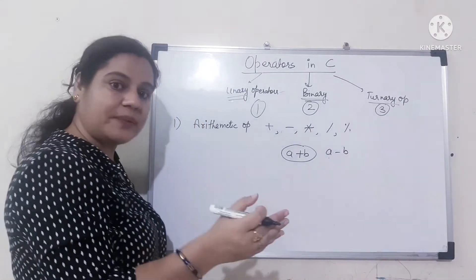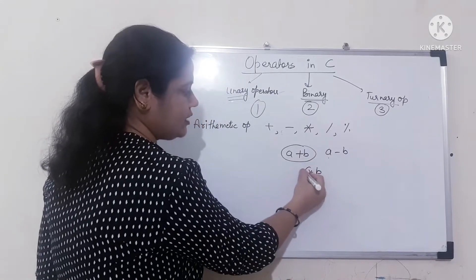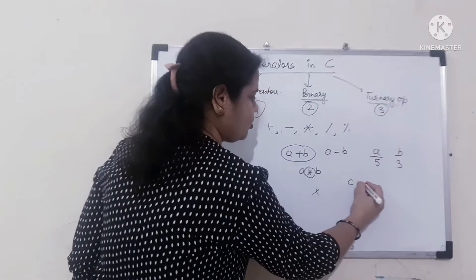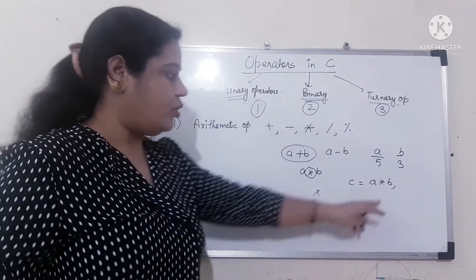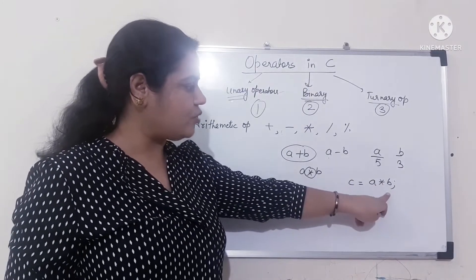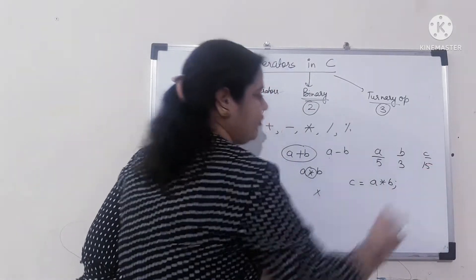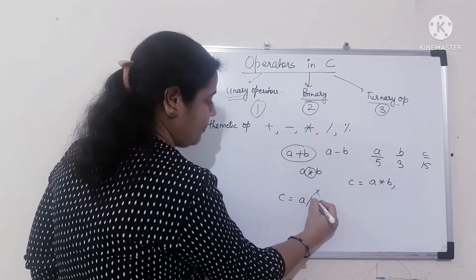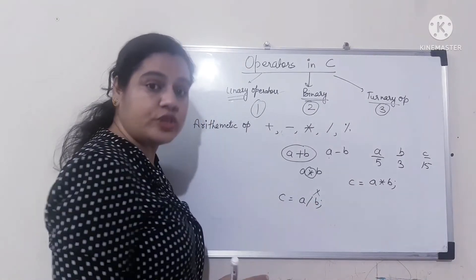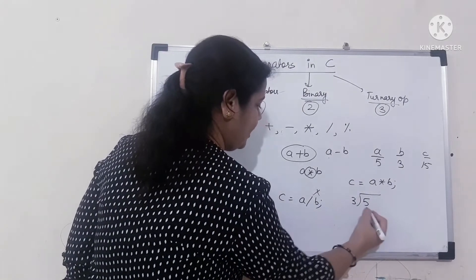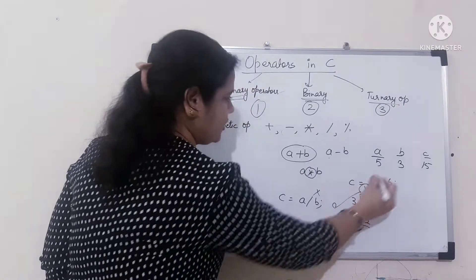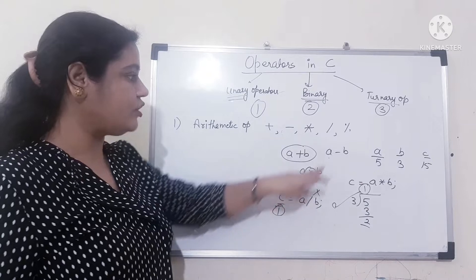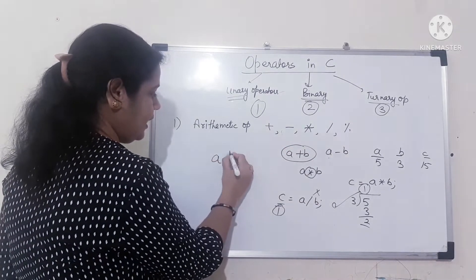Multiply: if you want to multiply two numbers, A into B. For division, if A is equal to 50 divided by B, it will give you the quotient. Like 5 divided by 3 — 3 ones are 3, remainder 2 — it will give you the quotient, which is 1. If you want the remainder of any expression, you can do A mod B.